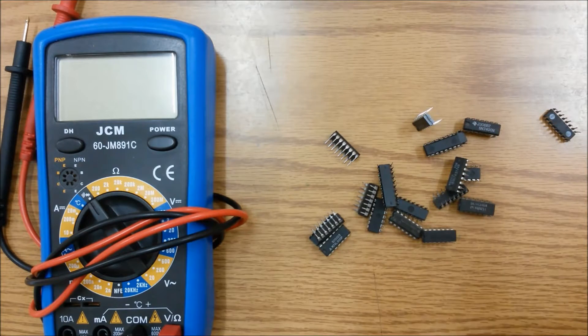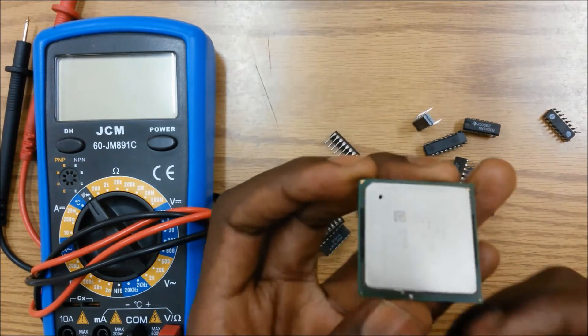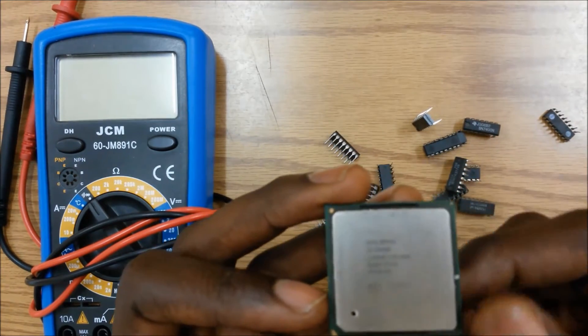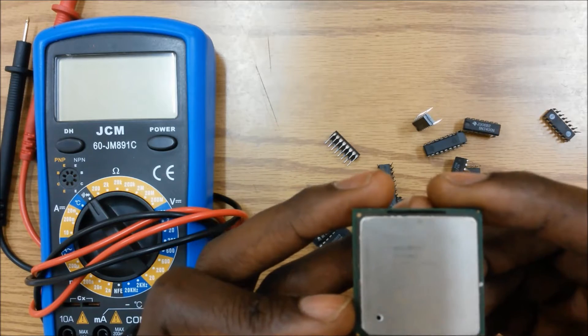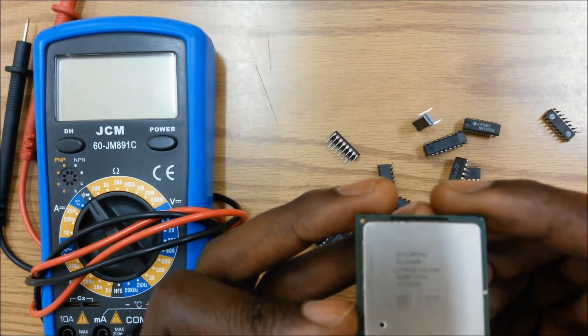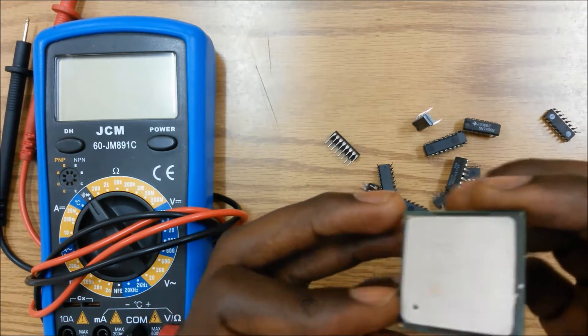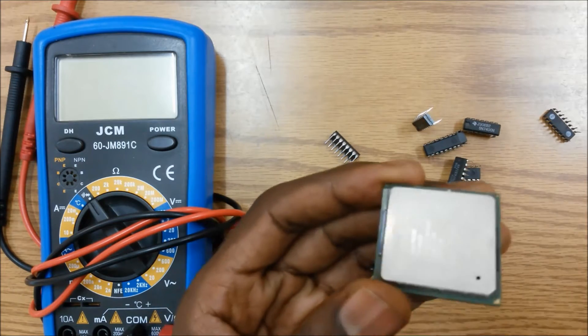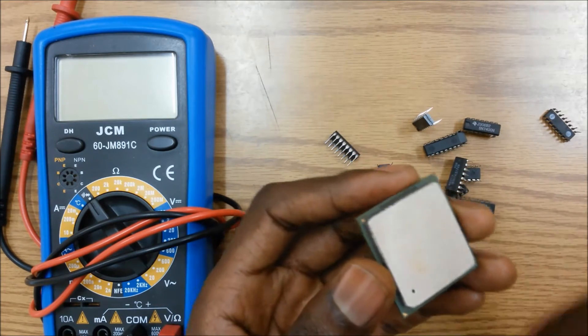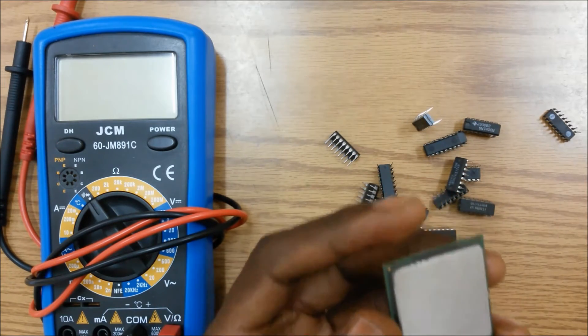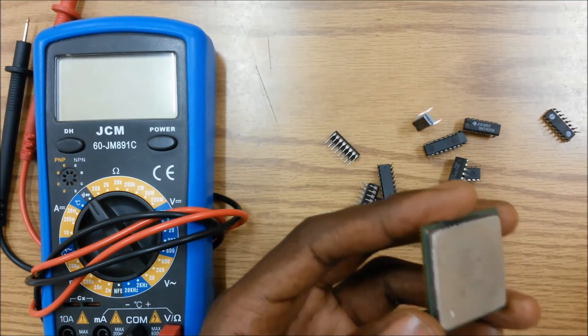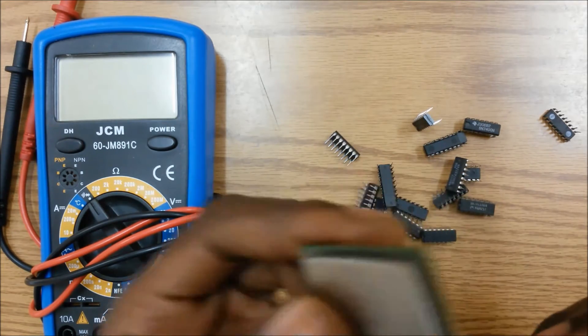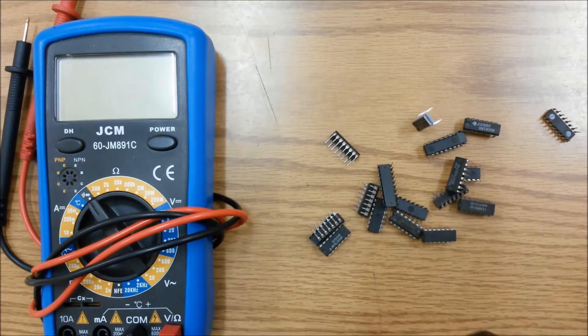So, here I actually have a microprocessor from a computer, and this is an Intel Celeron 2.4 Gigahertz processor, and it is an integrated circuit. And it actually has a number, trillions, or even billions, or even trillions of transistors, which actually make up this processor here.